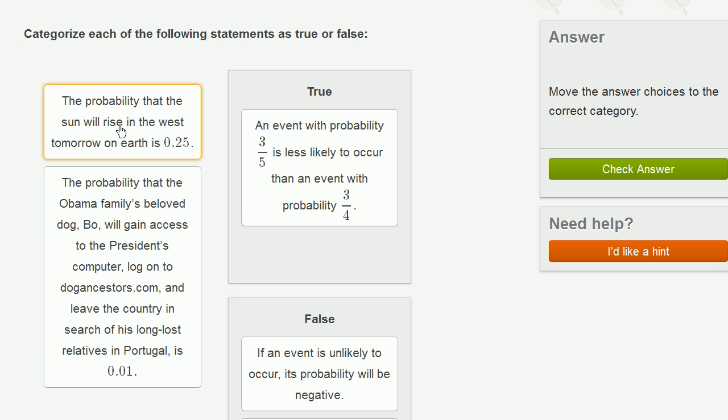The probability that the sun will rise in the west tomorrow on Earth is 0.25. You probably already know that the sun rises in the east. And assuming that the Earth continues to rotate in the way that it rotates, it will continue to rise in the east. Now, there is some ultra, ultra small probability that an asteroid or meteorite of the right mass hits Earth in the exact right way to somehow reverse its spin to maybe make the sun rise in the west. But that's a super, super, super duper small probability.